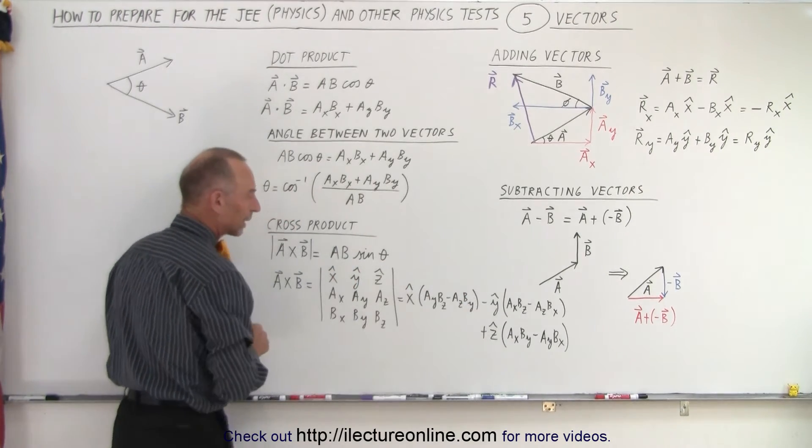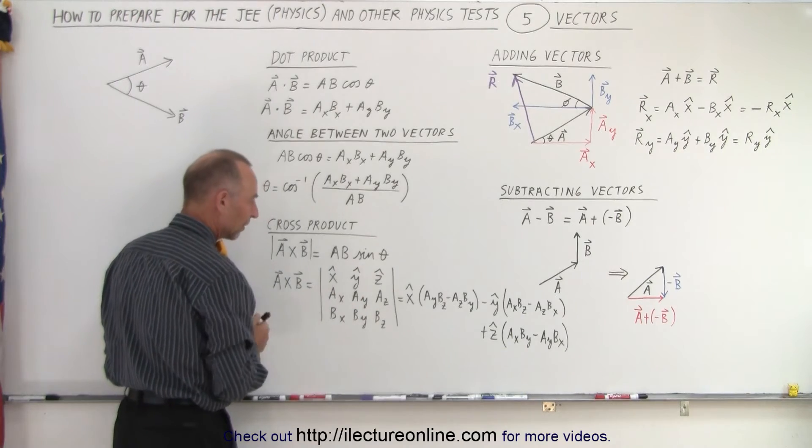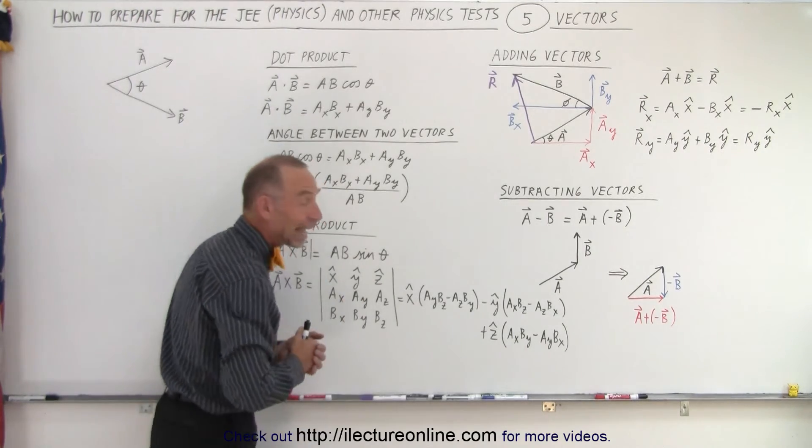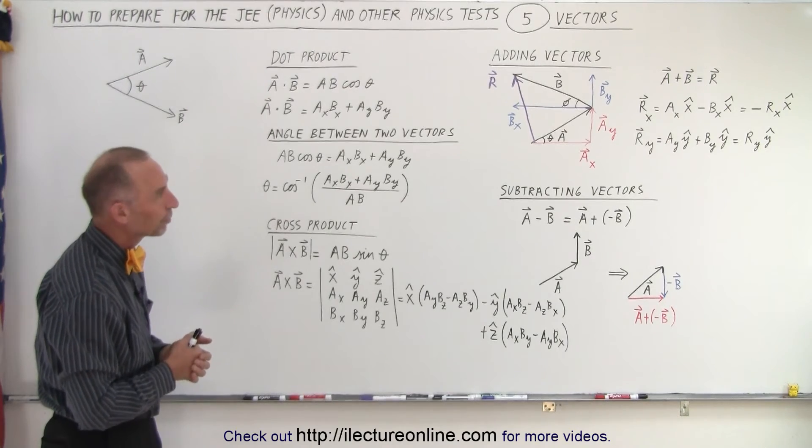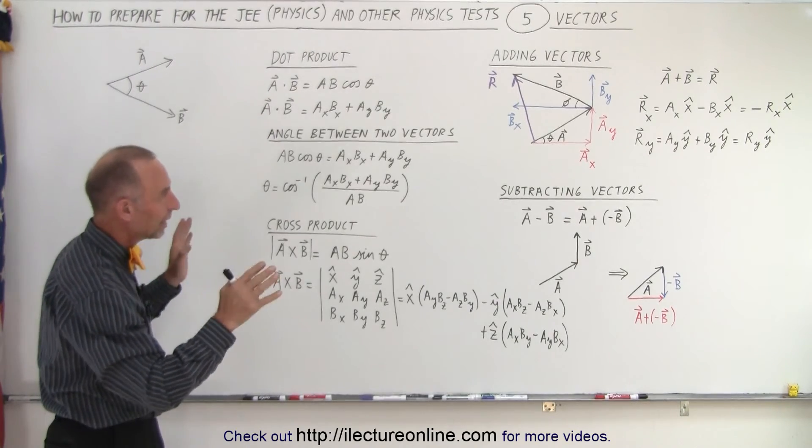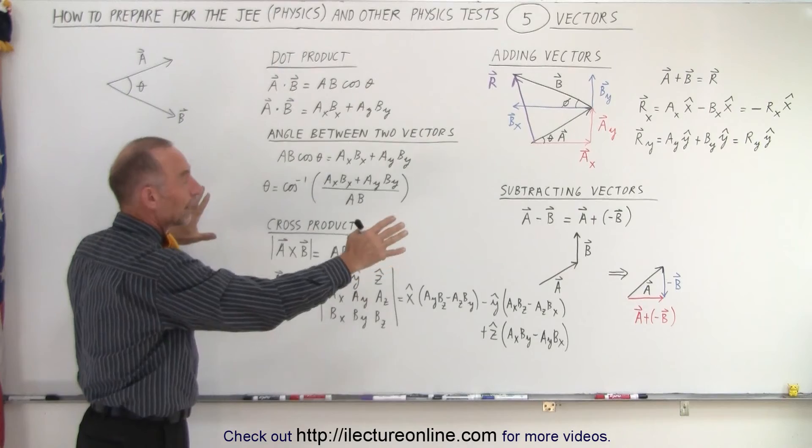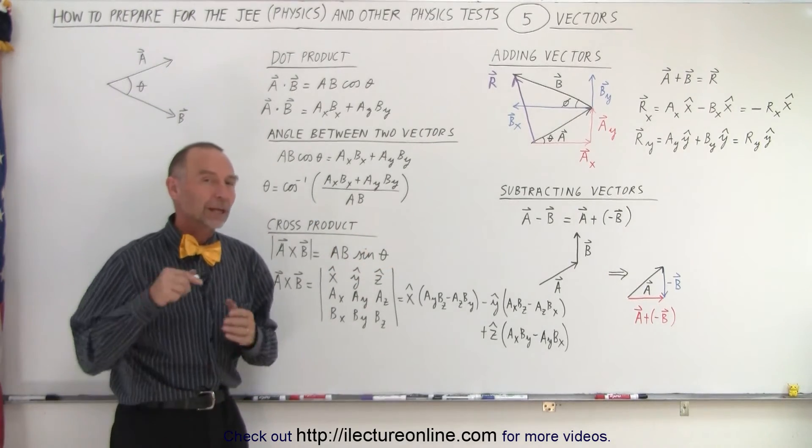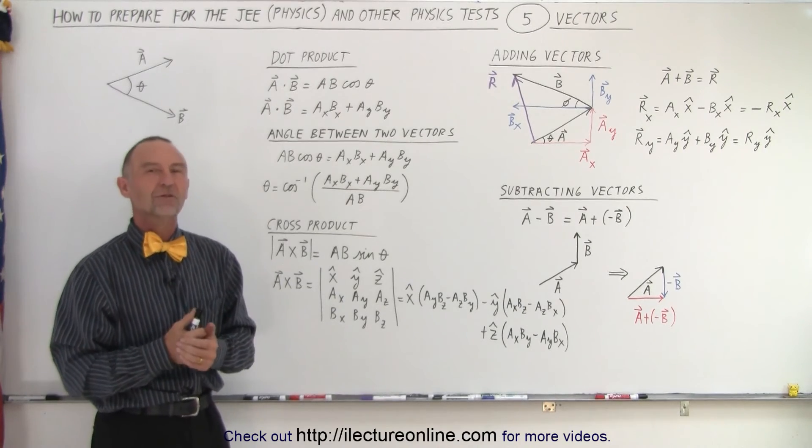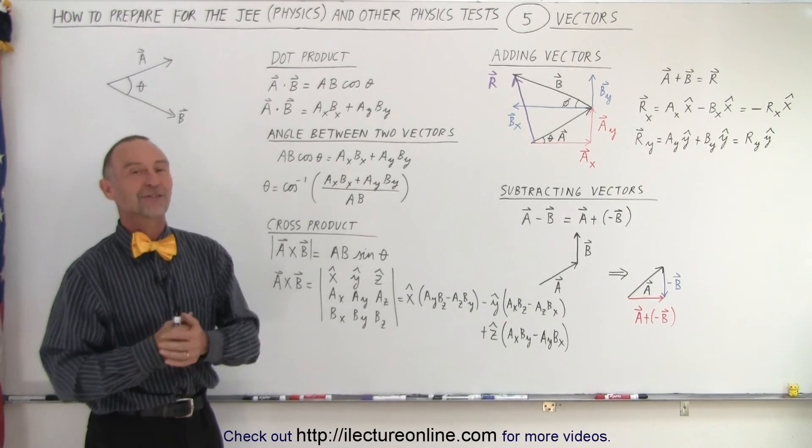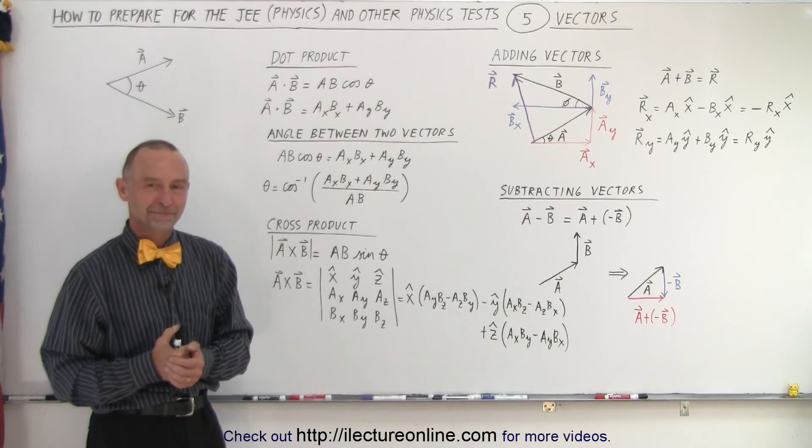Then you do the multiplication using the vector notation. And that's the answer you'll get for the cross product of two vectors. So at the very least, you should understand and know and memorize what's on the board when it comes to how to deal with vectors. And you should be in pretty good shape for most of the test questions that you might encounter on a physics test. Thank you.